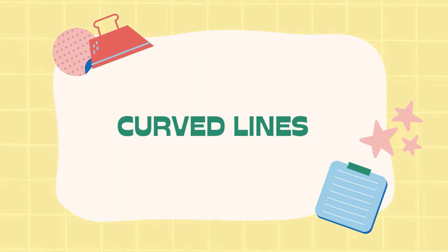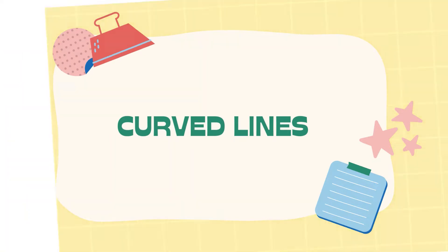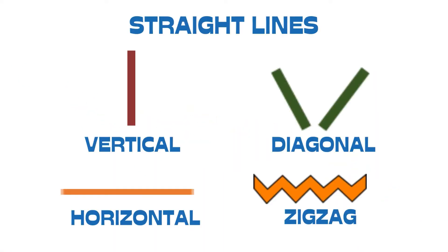So, let's find out first the kinds of straight lines. We have vertical, diagonal, horizontal, and zigzag. These are examples of straight lines.